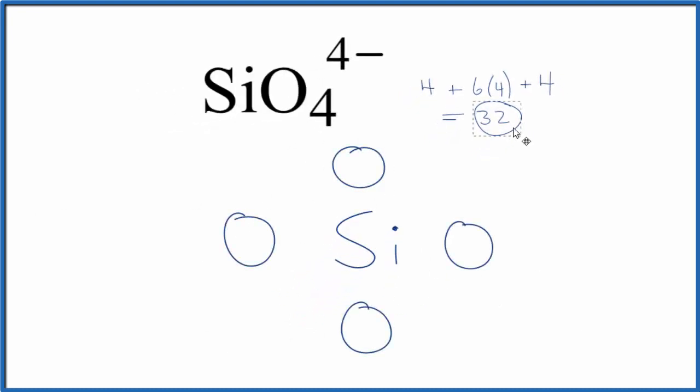So remember, we have these 32 valence electrons. We'll start by putting a pair of electrons between each of the atoms here. This will give us our bond between the Si and the O. So we formed the chemical bonds.